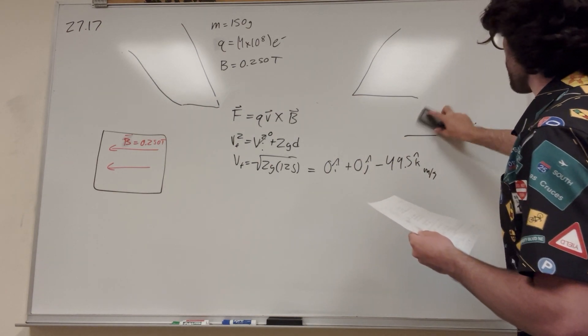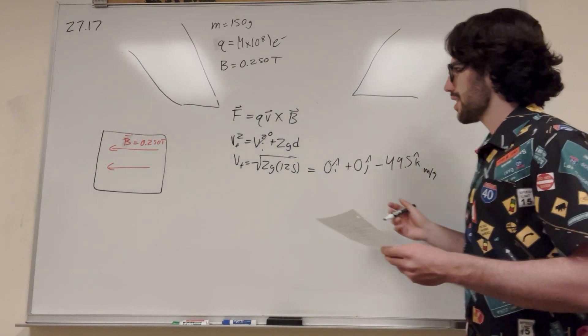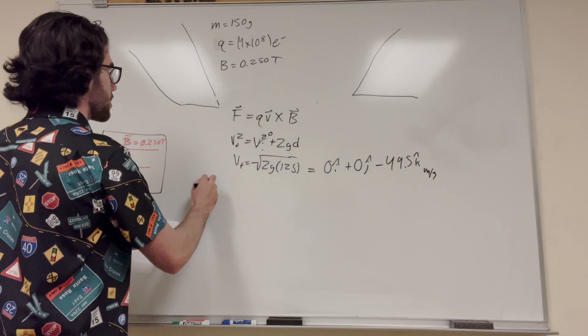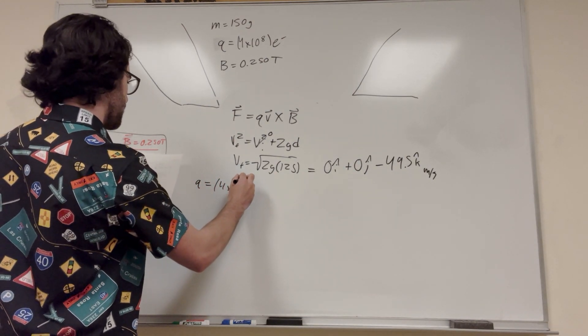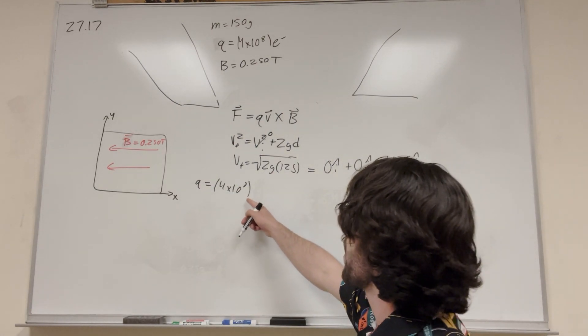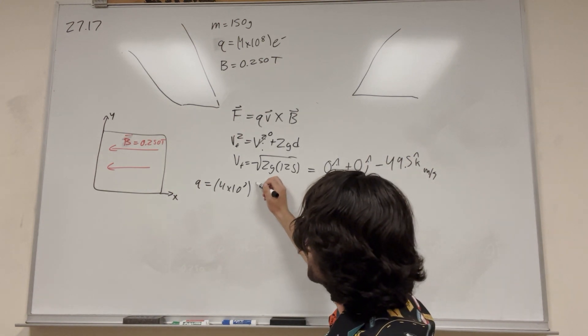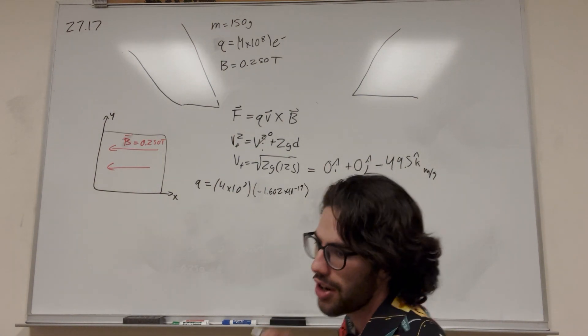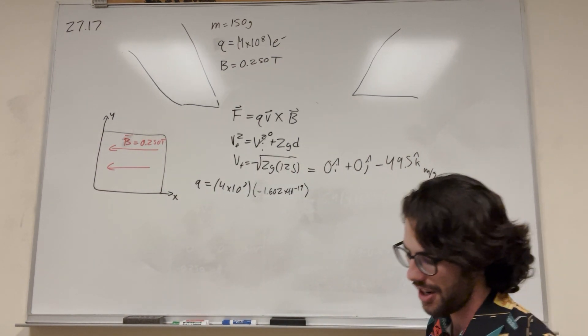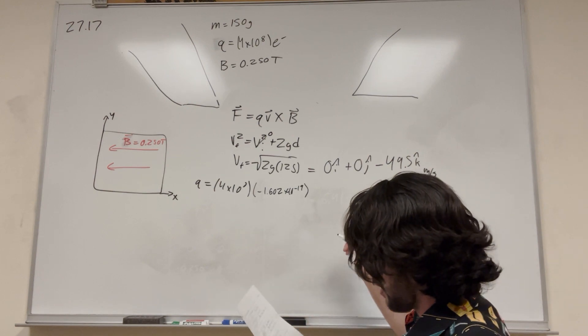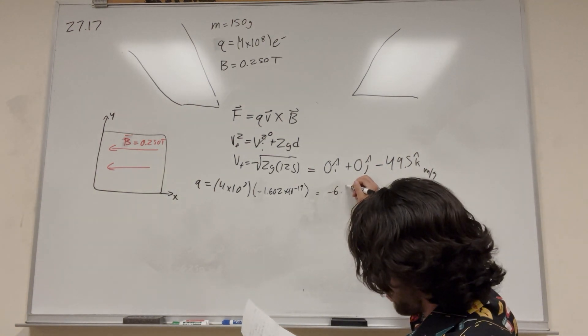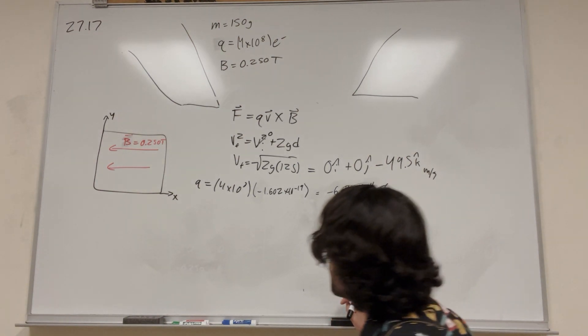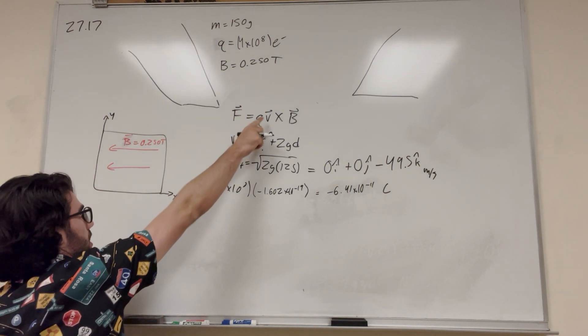So we have everything now. So we want to multiply Q. So we have Q is equal to 4 times 10 to the 8 electrons. So then we're multiplying the amount of electrons by the charge of each electron. So each electron is a negative charge. Negative 1.602 times 10 to the negative 19 is the charge of each electron. So if you multiply each electron by the charge of the electron, you're going to get a number. So then this is going to give you negative 6.41 times 10 to the negative 11 coulombs, which is the total charge of the ball.